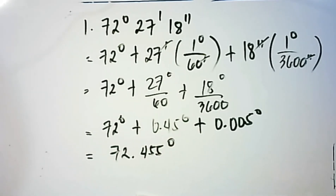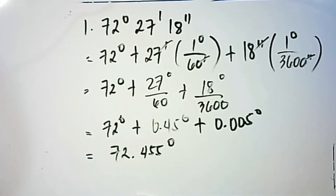So this is now the answer. 72 degrees, 27 minutes, and 18 seconds converted into decimal degrees gives us 72.455 degrees.